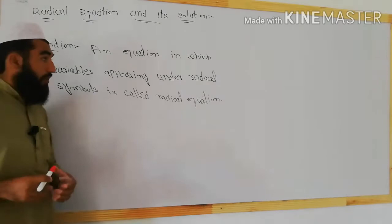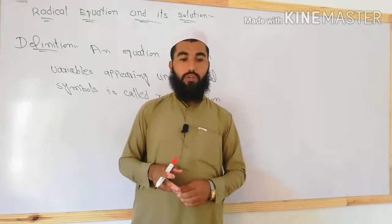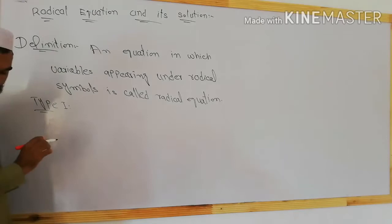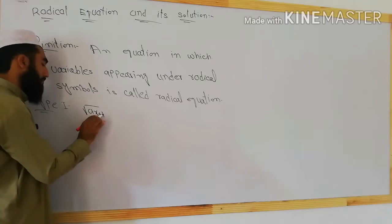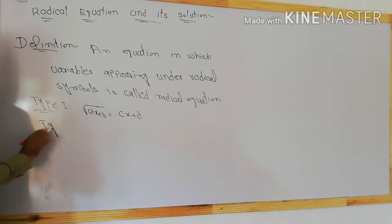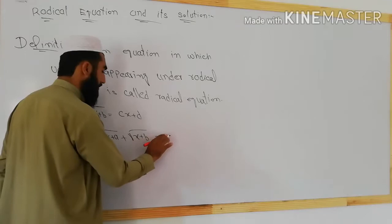Today we will discuss three types of radical equations and their solutions. The first type is: √(ax + b) = cx + d. The second type is: √(x + a) + √(x + b) = √(x + c).